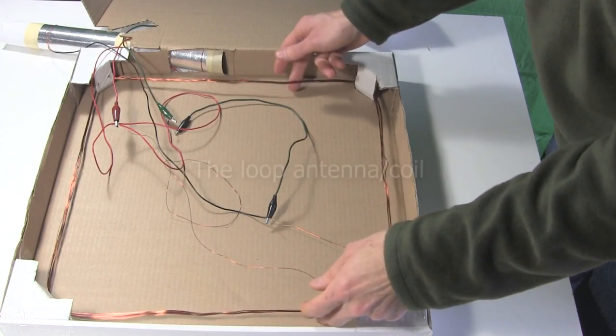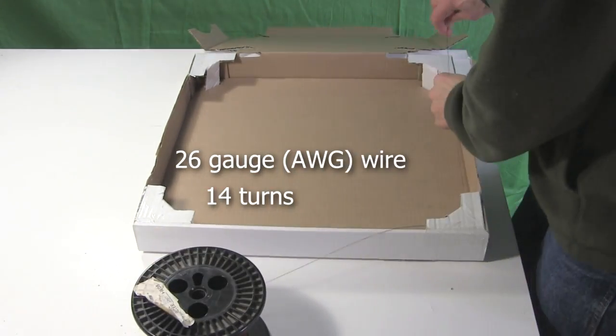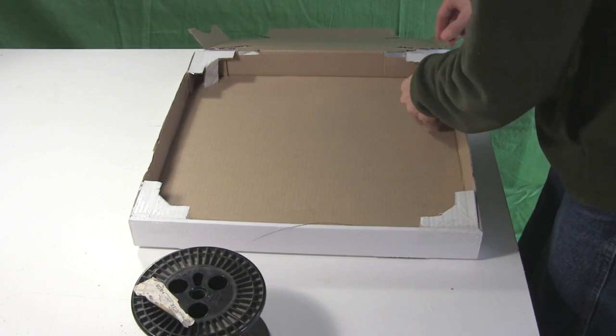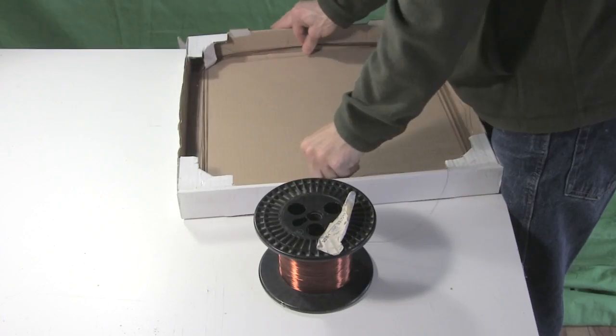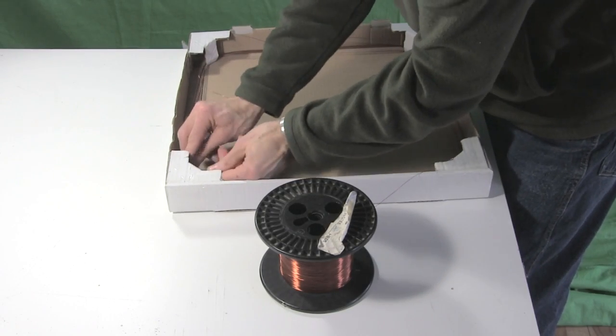Next is to make the loop antenna coil. I'm using 26 gauge wire and doing 14 turns. 22 gauge, 18 and so on will also work. Just make sure it's insulated. As you can see the more turns you have the harder it gets to pull the wire. But doing like I'm doing here works quite well.